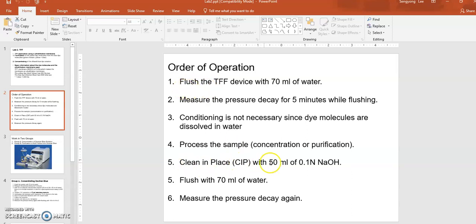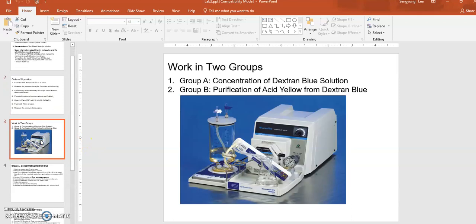Just do one CIP at the end of your process. After your operation, empty the system and fill with 50 ml of 0.1 N sodium hydroxide solution to clean out leftover material. Then flush the system with 70 ml of water to ensure everything is cleaned and residual sodium hydroxide is gone. During this time, observe pressure decay again to make sure there's no membrane damage or disconnects in the tubing system.